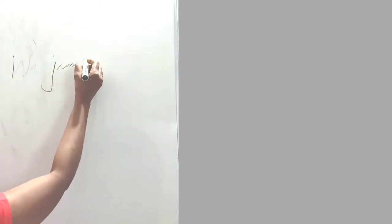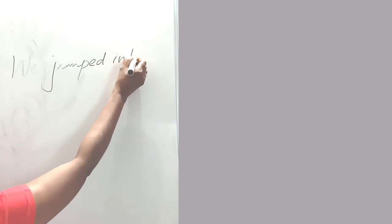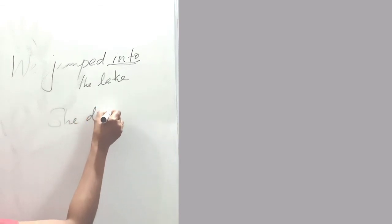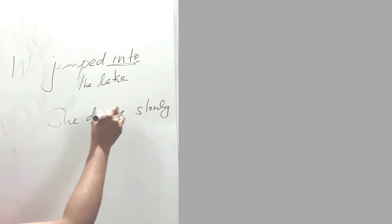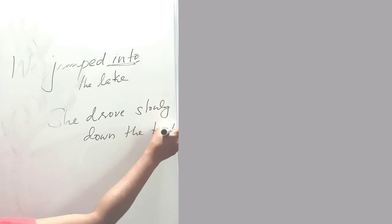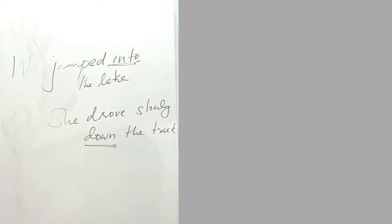Now we can consider two sentences. 'We jumped into the lake.' Notice the word 'into'. Then, 'She drove slowly down the track.' These underlined words are called prepositions: into, down. There are a lot of prepositions like in, on, under, beyond, round, into, near, etc.